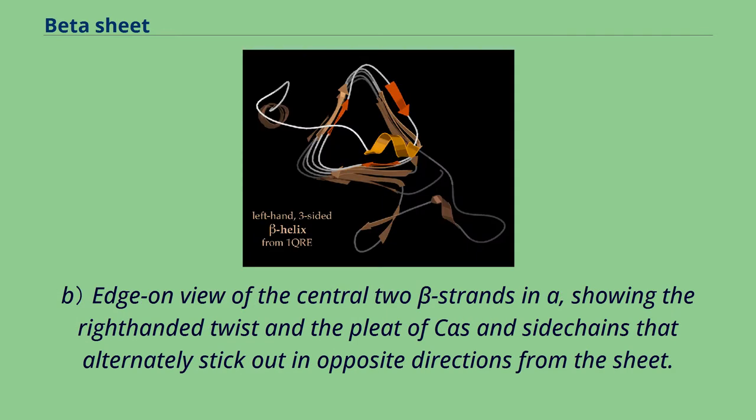Edge-on view of the central two beta strands in A, showing the right-handed twist and the pleat of C-alphas and side chains that alternately stick out in opposite directions from the sheet.